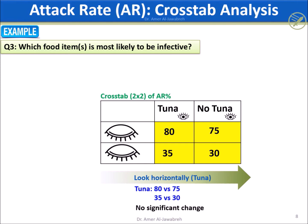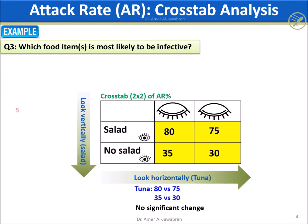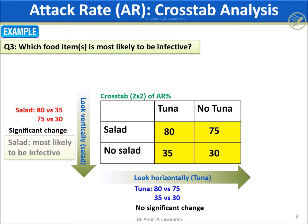However, if we look vertically at salad and turn a blind eye to tuna, we find a significant difference: the AR for salad eaters is 80% compared to 35% for non-eaters. The same applies comparing 75% to 30%. Thus, egg salad is the main suspect for this foodborne outbreak.